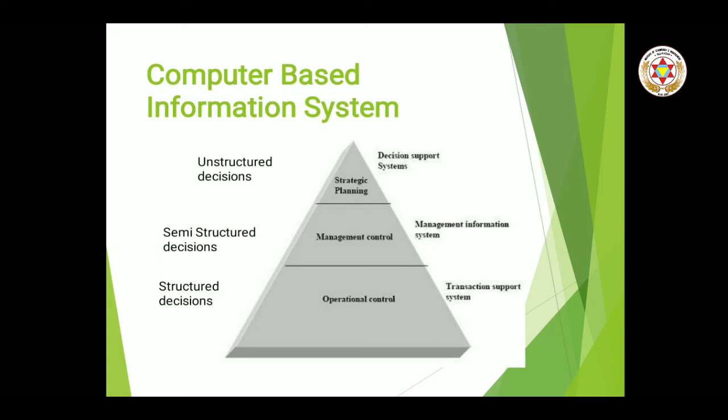Number one is your strategic planning — that means top management. Jaise aapka chairman hai, principal, registrar — that is top management. Then we have management control — that means middle management — your HODs, your faculties. And then we have operational control — the operational level — that means students. In an organization example: top management has CEO and board of directors, then project managers in middle management, and in lower management we have normal employees.